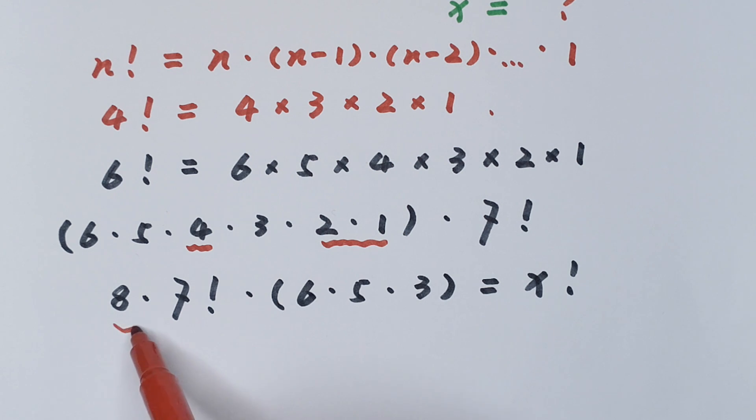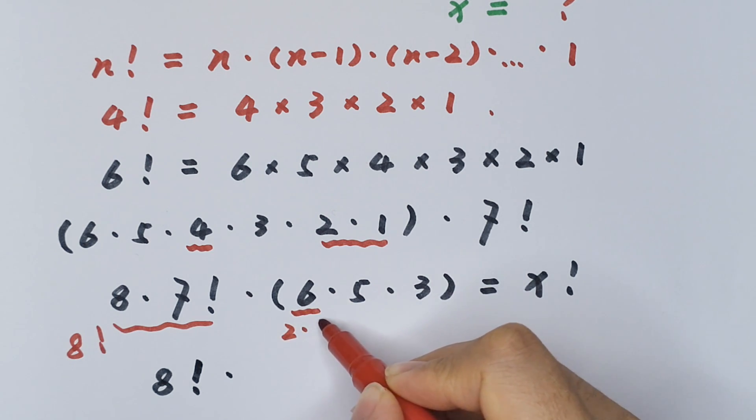This part is 8 factorial. So 8 factorial times 6, where 6 is 2 times 3.